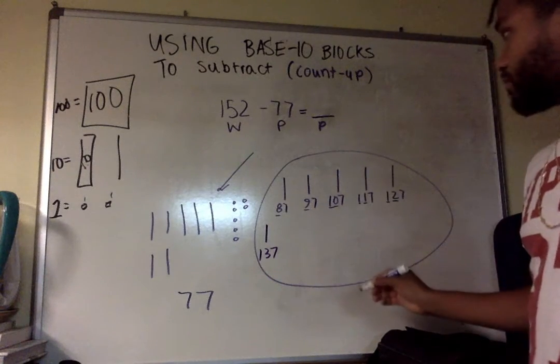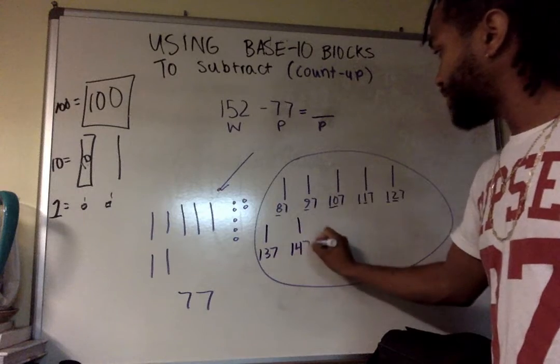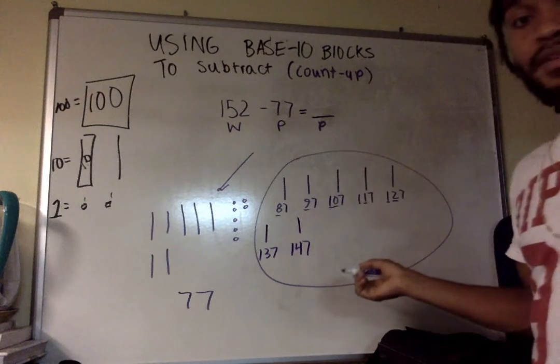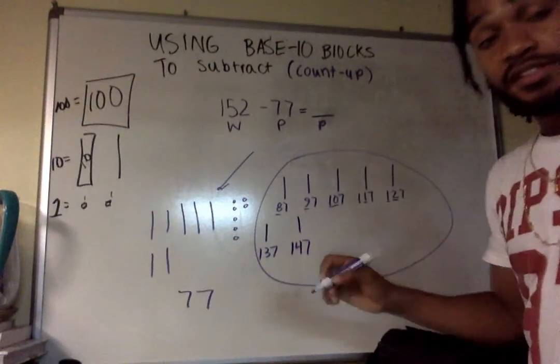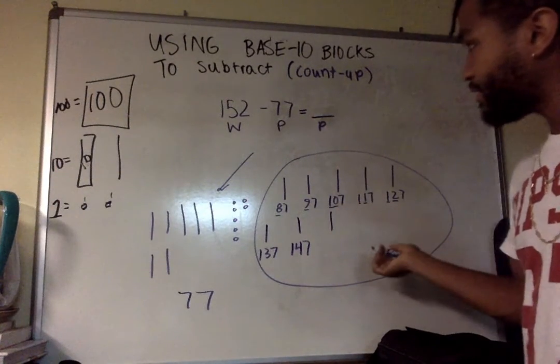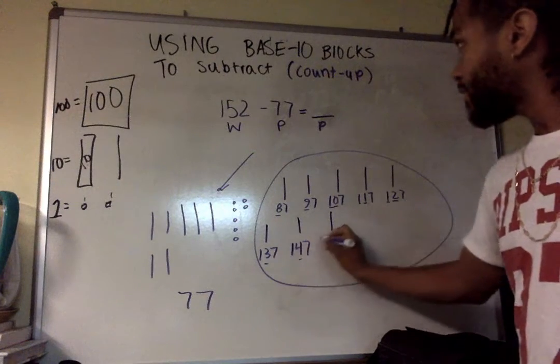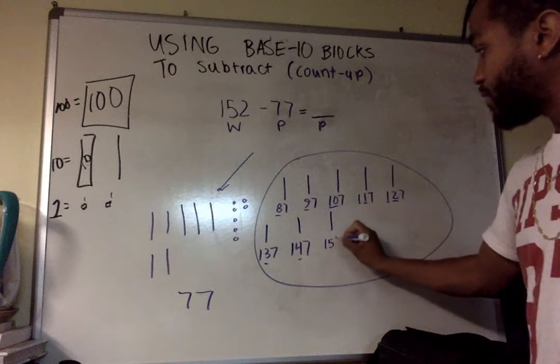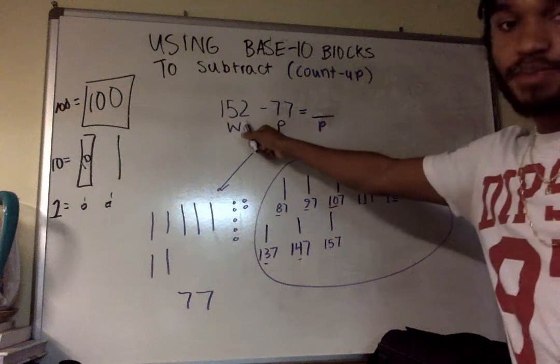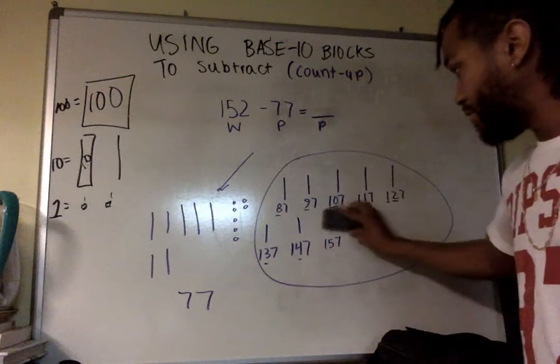137. I'm going to add another 10. 147. Now, this is where it gets a little tricky. Should I add another 10? If I notice the pattern, I'm going to realize it gets me to 157. That's past my whole. So I shouldn't be adding another 10. Should not. Do not do that.